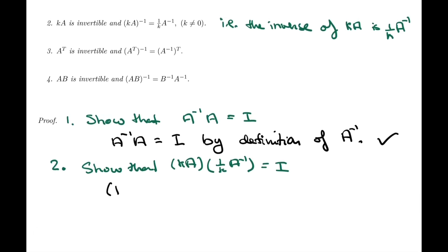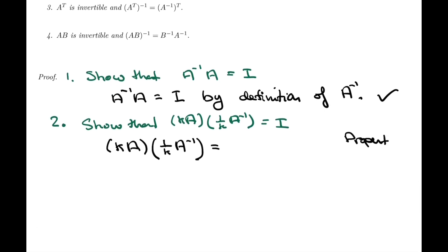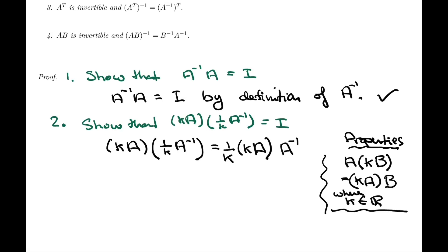Just like before, we'll start from the left-hand side and develop the expression using properties of matrix multiplication. If you look back in your notes on matrix multiplication, you'll find a property that says A times k times B equals k times A times B, where k belongs to R. So the 1 over k in front of A inverse can be moved completely to the front, leaving A times A inverse.